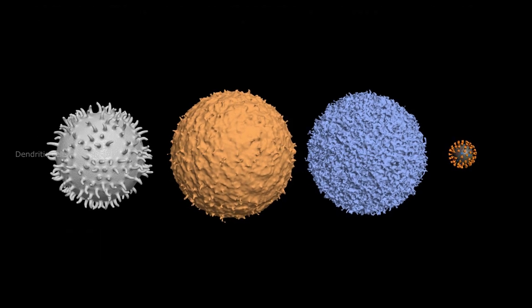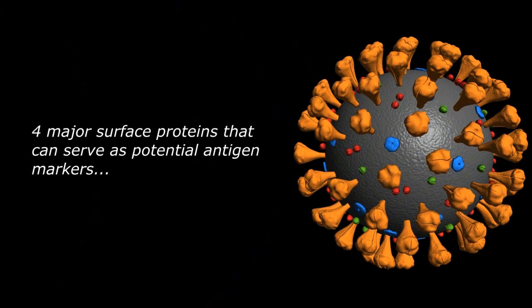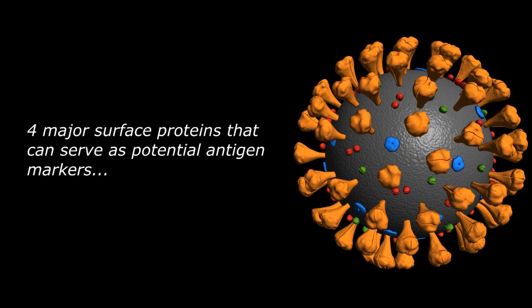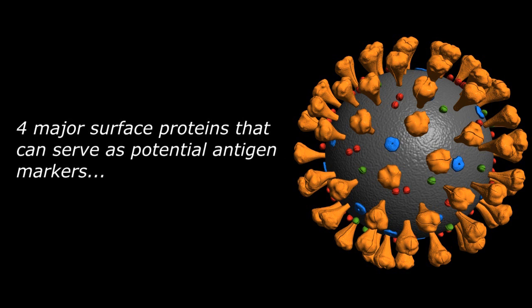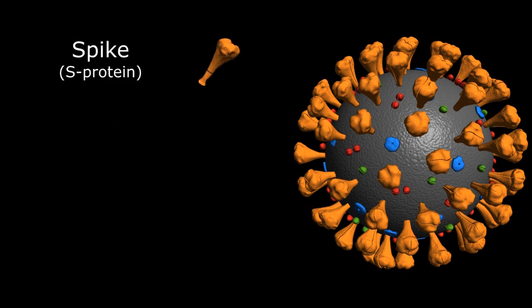Looking back at our coronavirus, there are four major structural proteins on the surface of the virus that can serve as potential identifiable antigens for our immune systems, including the spike or S protein,